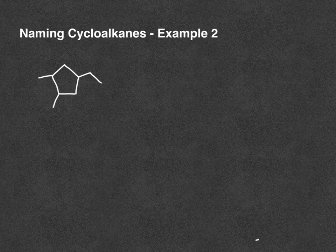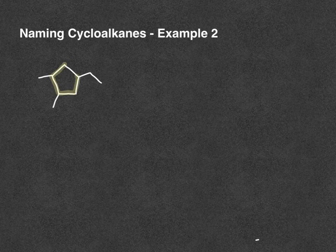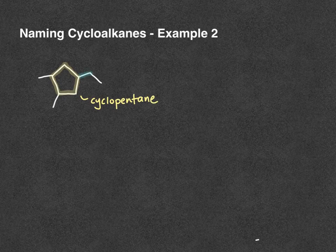We're going to go through another example. This time our parent is a five-membered ring — cyclopentane. We have branches: an ethyl and a methyl off to the right, and then two methyls off to the left.